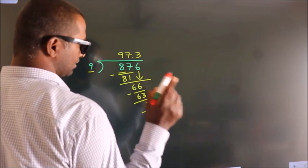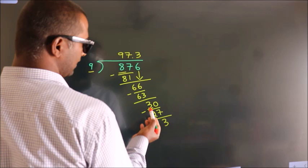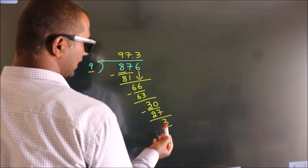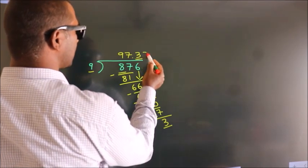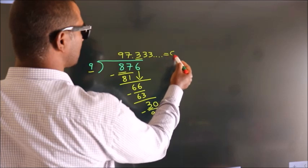Now you observe, we had 3 here and we got 3 again. That means this number keeps on repeating. So this is our quotient.